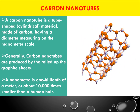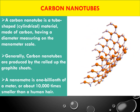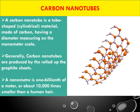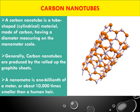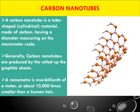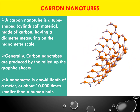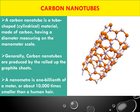To become a nanomaterial, any one of the external dimensions should be in the nanoscale, meaning below 100 nanometers. Carbon nanotubes also have one of their dimensions within the nanoscale. Generally, carbon nanotubes are produced by the rolling up of graphite sheets.